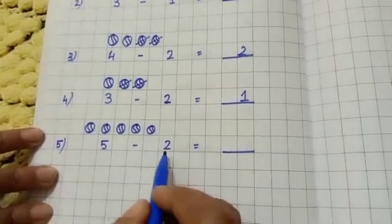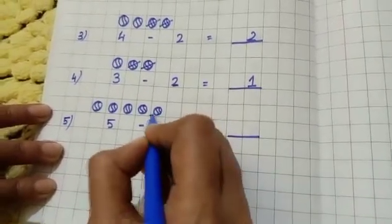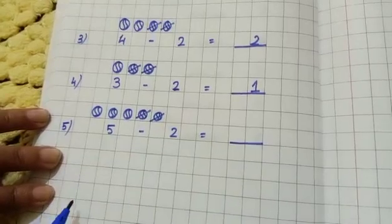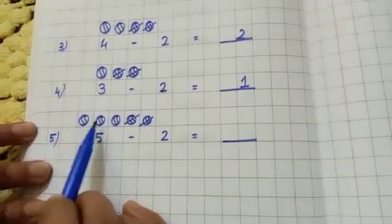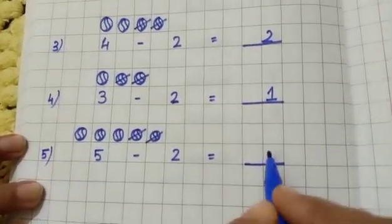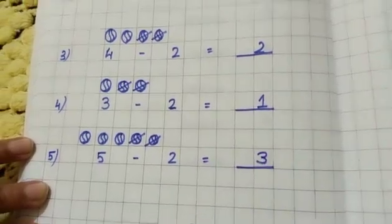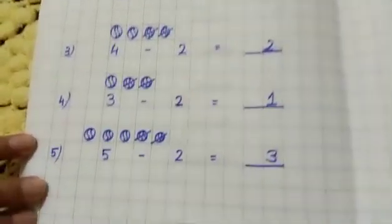So how many I will remove from here? Two. One, two. So how many left? One, two, three. Three, three, okay children. So practice this one at home, bye.